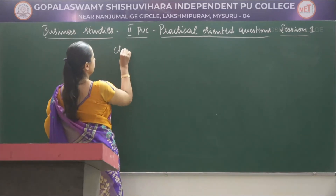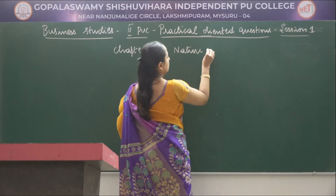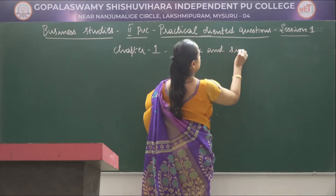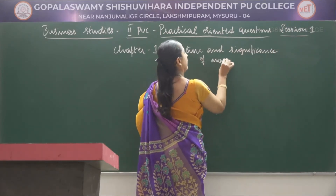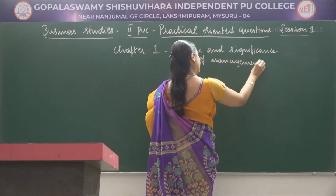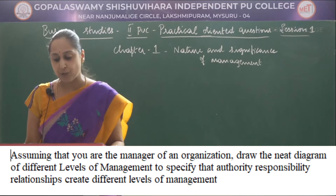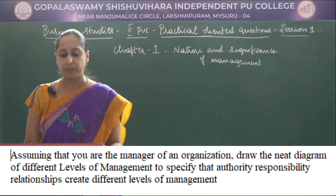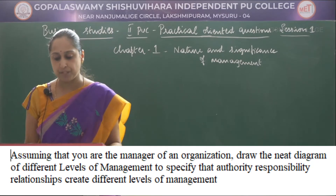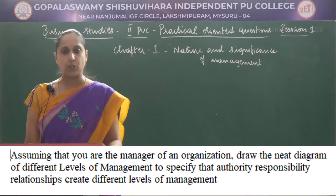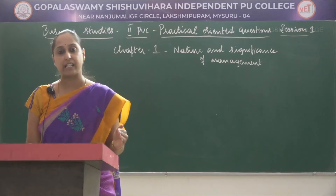In Chapter 1, that is Nature and Significance of Management, the practical oriented question is: assuming that you are the manager of an organization, draw the need diagram of different levels of management to specify that authority and responsibility relationships create different levels of management. In this practical oriented question, you have to write the diagram showing the various levels of management.